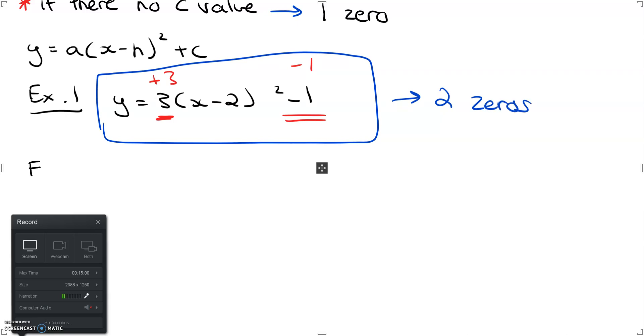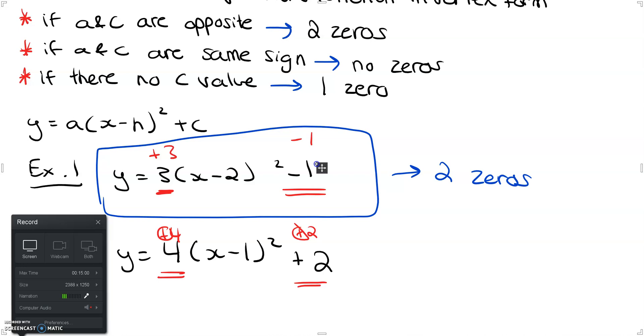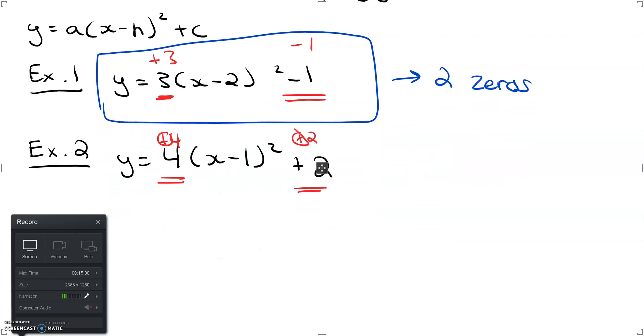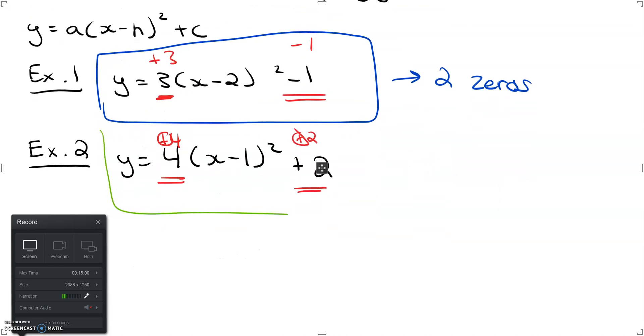All right moving on to another example, I have y is equal to 4 times x minus 1 squared plus 2. You can look and see that I have 4 which is positive plus 2, so I have two positive numbers. Again if I scroll back up and I see that a and c are the same sign which is case 2 over here, then I know I have no zeros. So if I examine this case and I want to graph this I would know that I have no zeros.